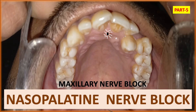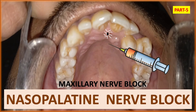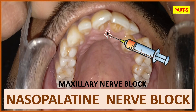Welcome back to Dental Cafe. Today we are going to discuss the maxillary nerve block — specifically the nasopalatine nerve block, the posterior superior alveolar nerve block, and the anterior superior alveolar nerve block. General anesthesia has already been discussed in the previous parts; the link will be shared.